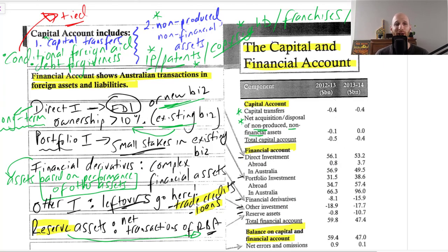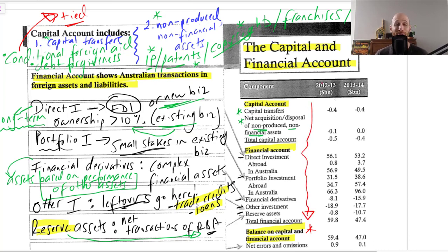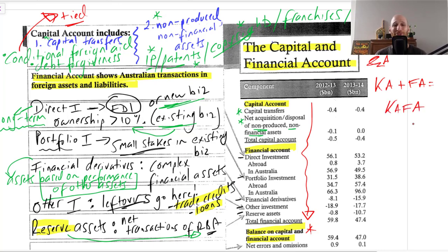The balance on the capital and financial account is calculated by simply adding all of these categories together. So: balance on capital account plus financial account equals the balance on the capital and financial account.